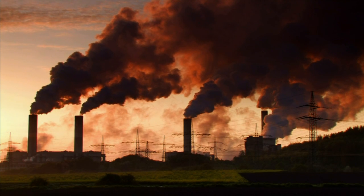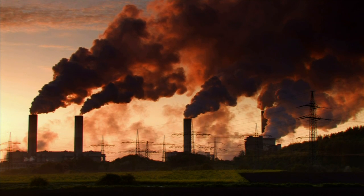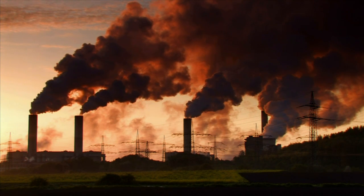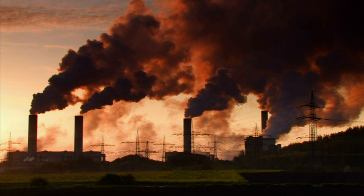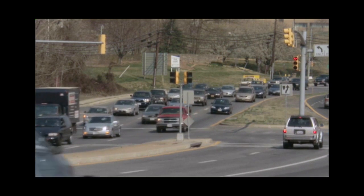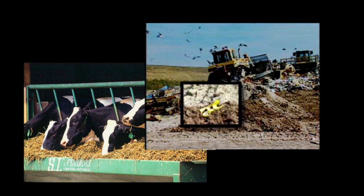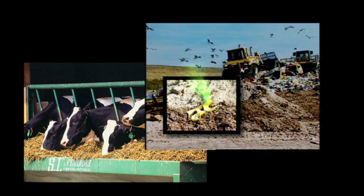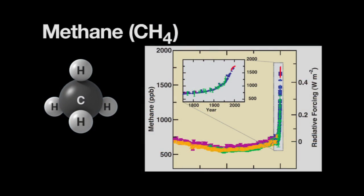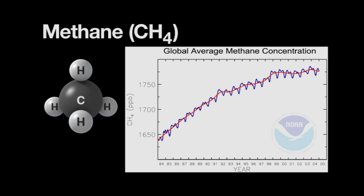Human activities have increased the atmospheric concentrations of other important greenhouse gases as well. Methane, which is produced by the burning of fossil fuels, the raising of livestock, the decay of landfill wastes, the production and transport of natural gas, and other activities increased sharply throughout the Industrial Age before starting to level off at about 2.5 times its pre-industrial level.